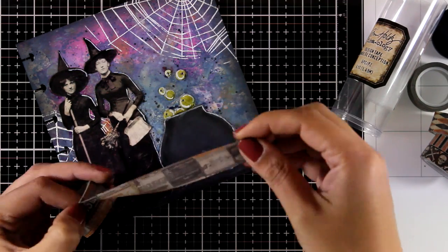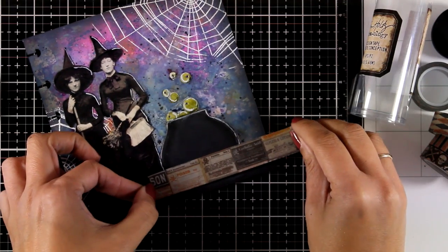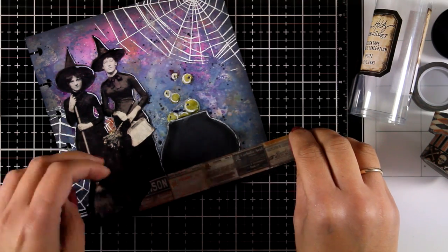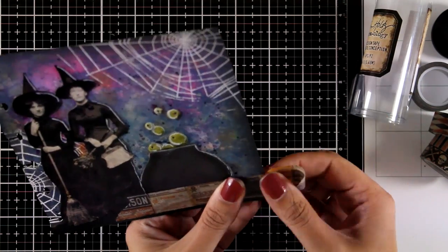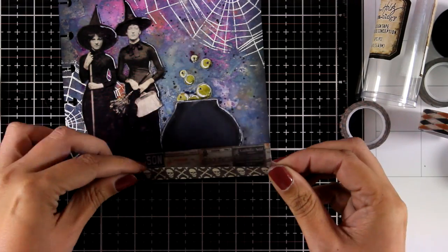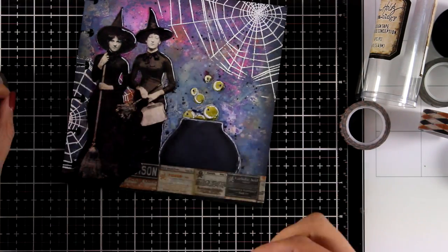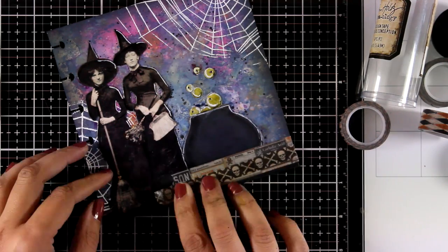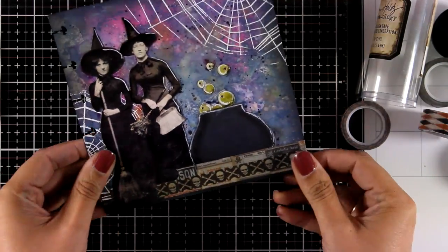Now lately I've been using washi tape on my art journals again and again. And I absolutely love it. So today I'm using design tape by Tim Holtz and all the tapes that I'm using come from the same set which is called Halloween. And it comes with six different designs in one packaging.